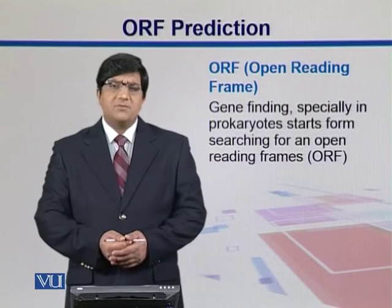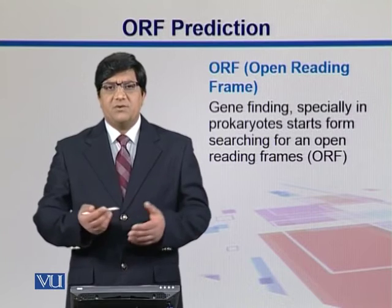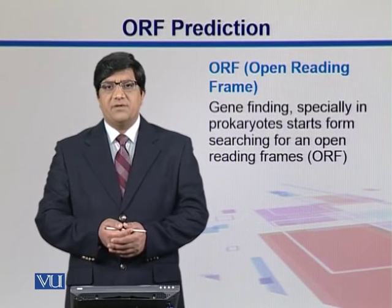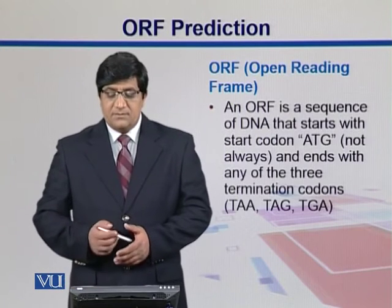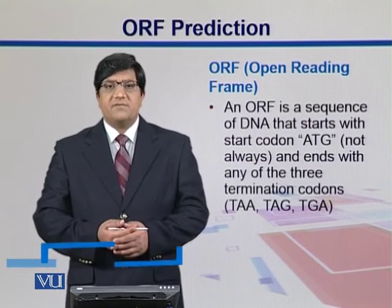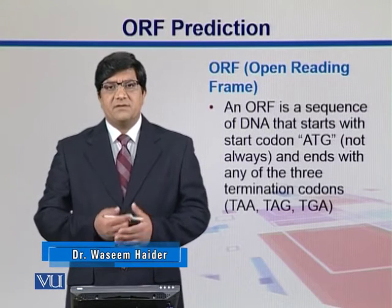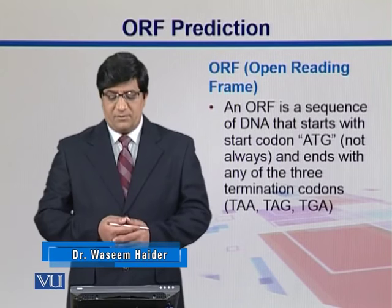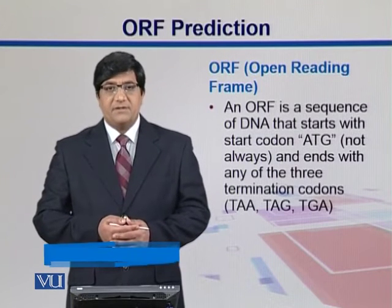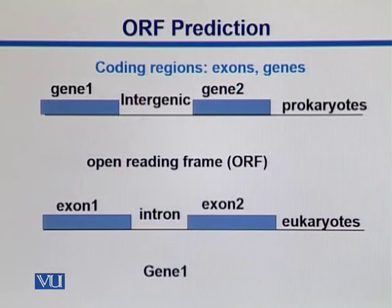Gene-finding, especially in prokaryotes, starts with finding ORFs, or open reading frames. An open reading frame is a sequence of DNA that starts with ATG and ends with one of the three stop codons: TAA, TAG, and TGA. We also call them termination codons.